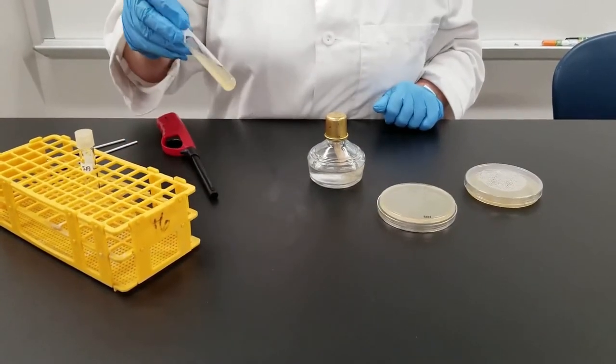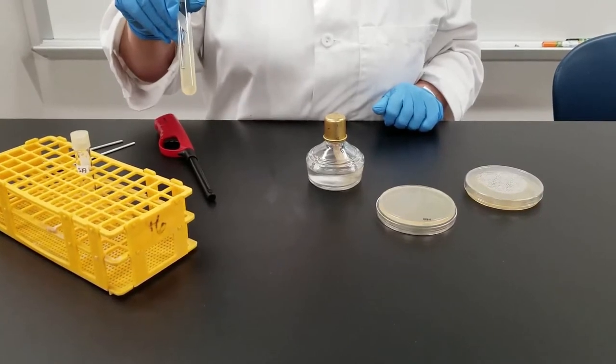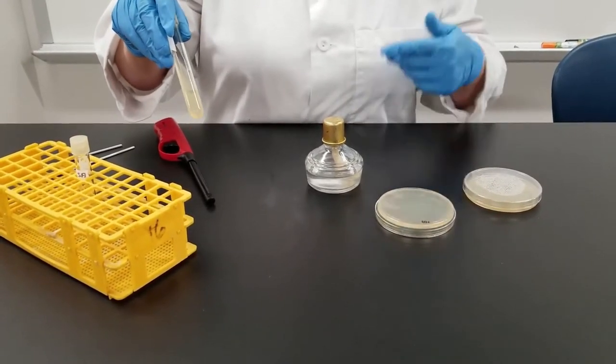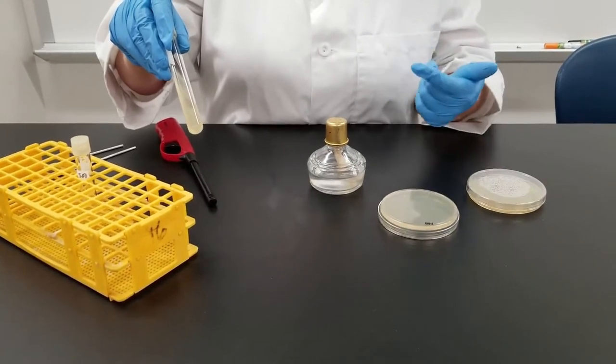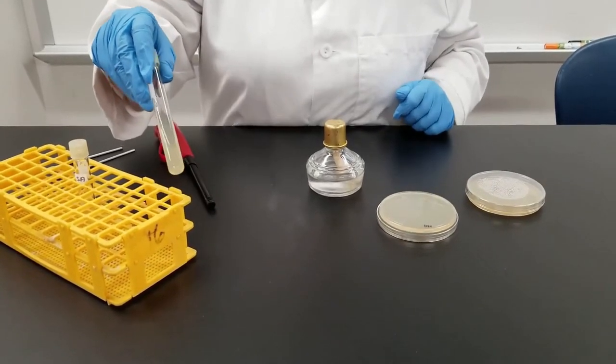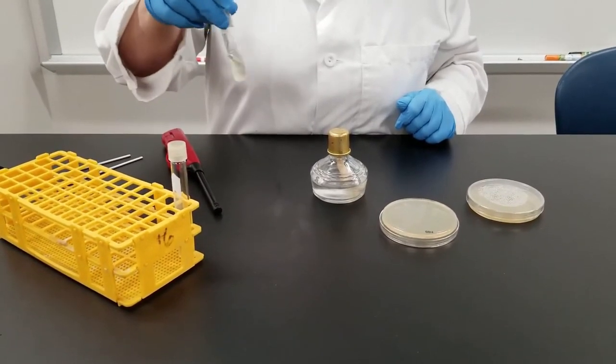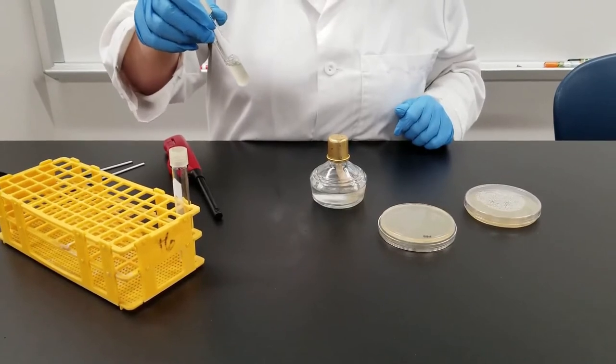Sometimes we will grow them on what we call a slant. That's where you've got the agar. In the agar you can make different types of nutrients added to it. So this would be a slant, you can inoculate that. And sometimes they will be grown in a liquid broth, as you can see in the test tube.